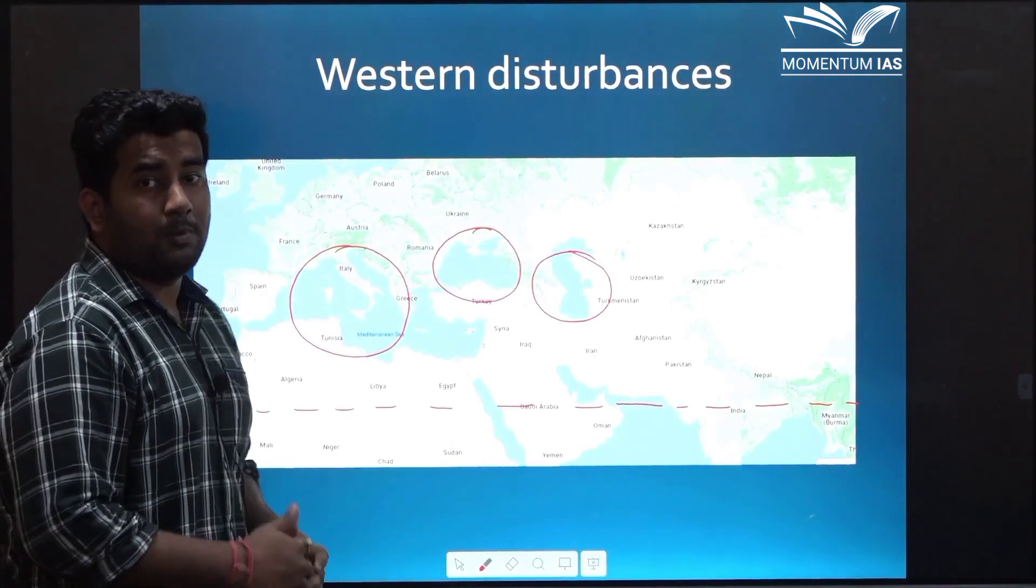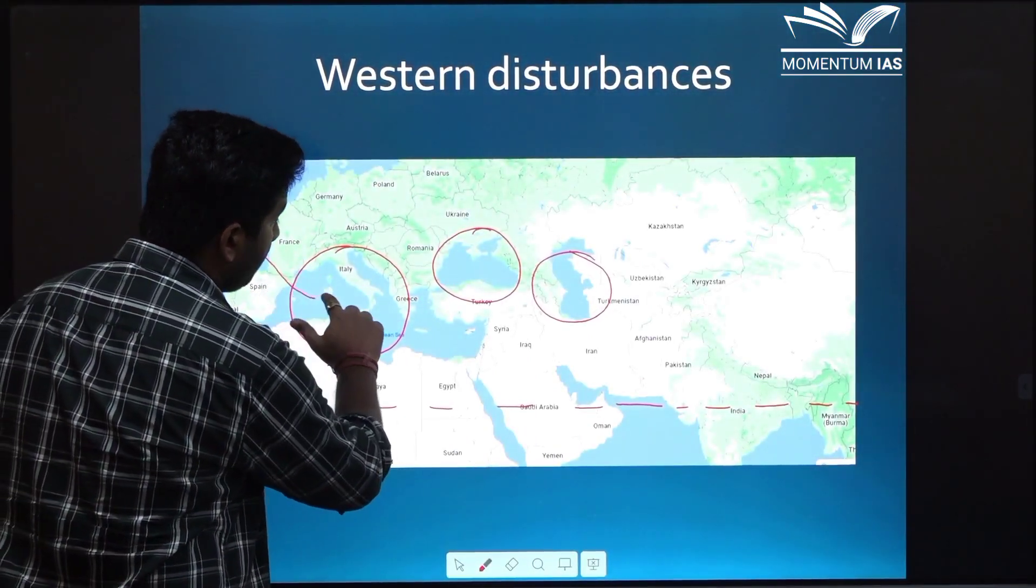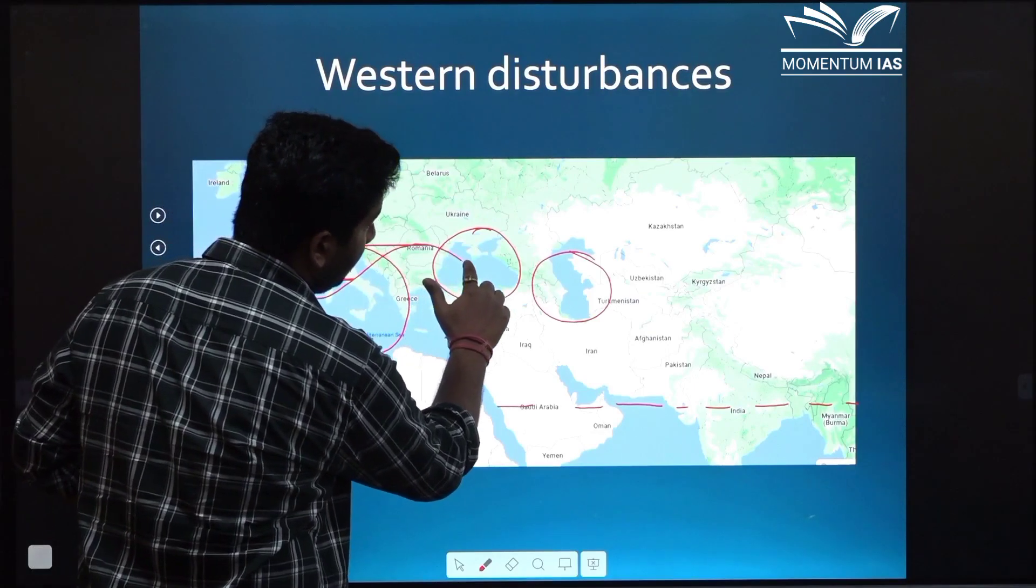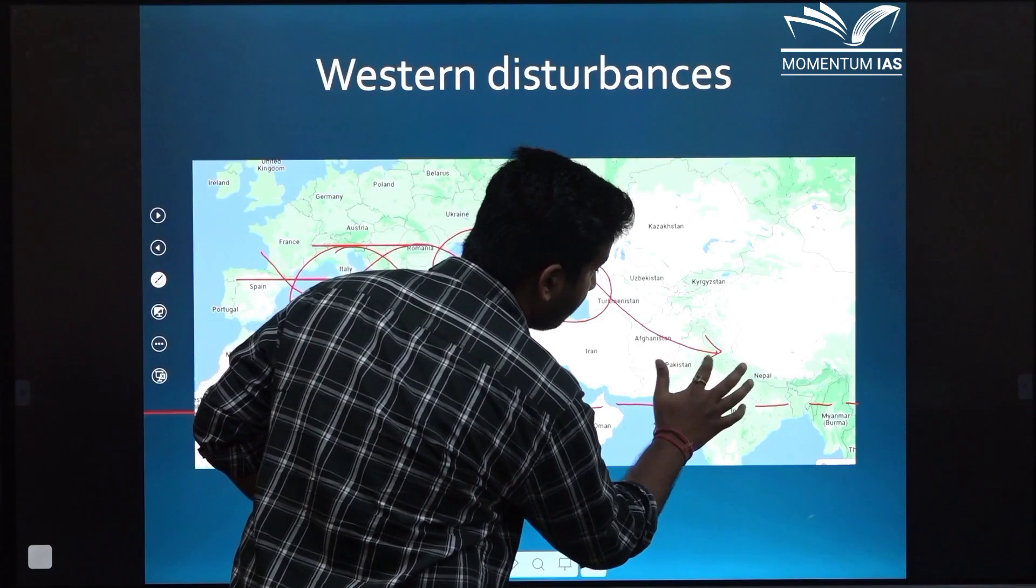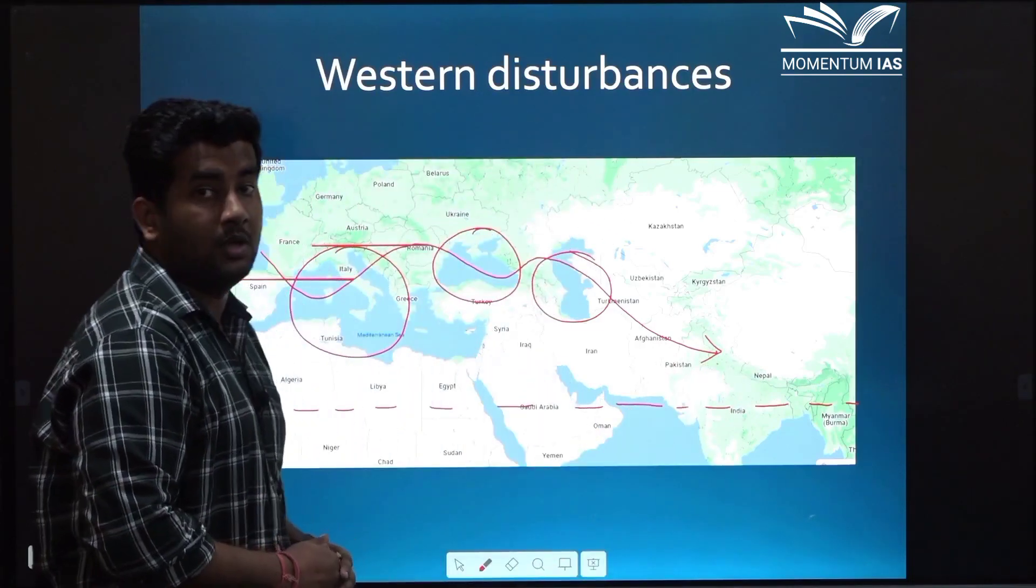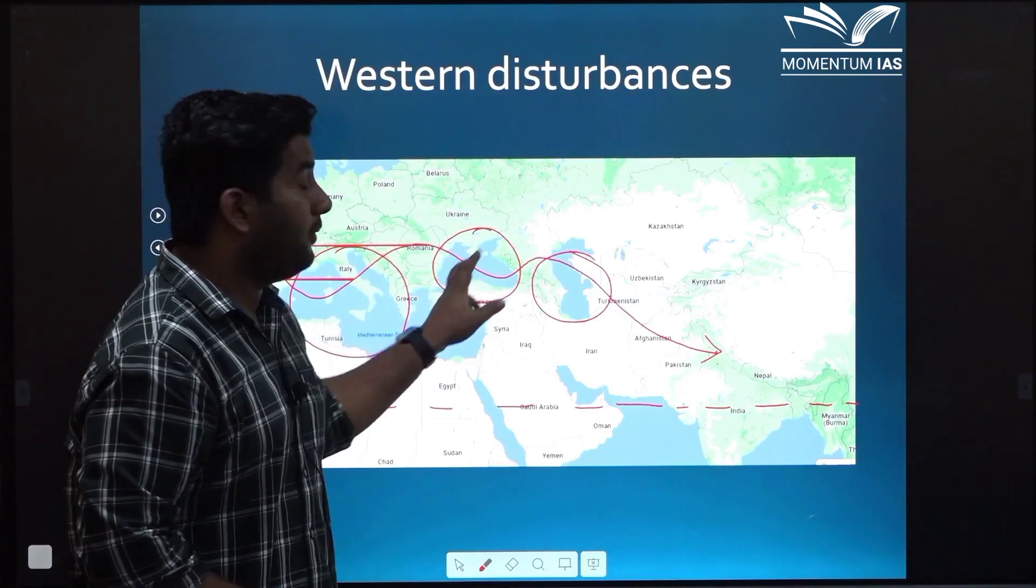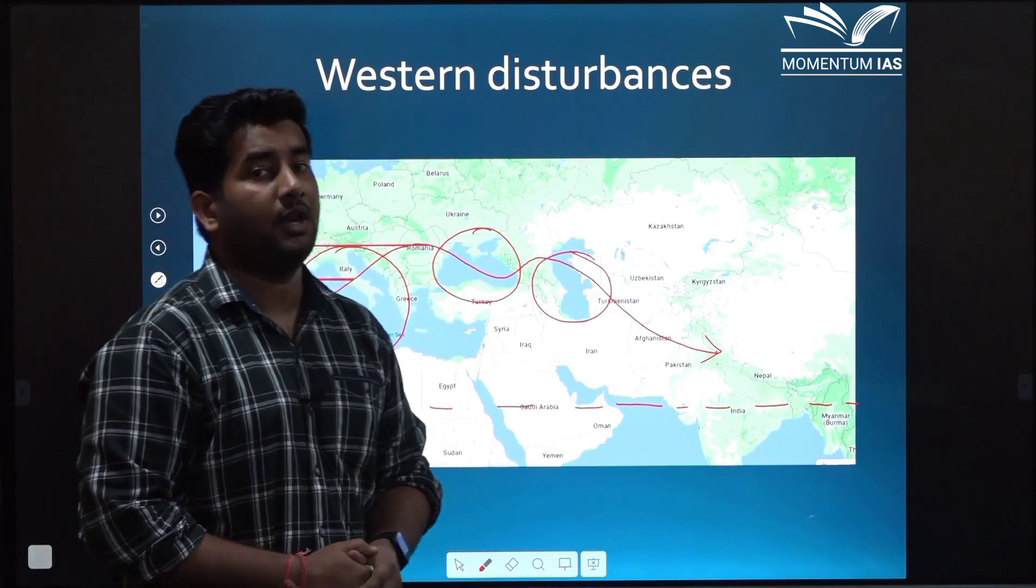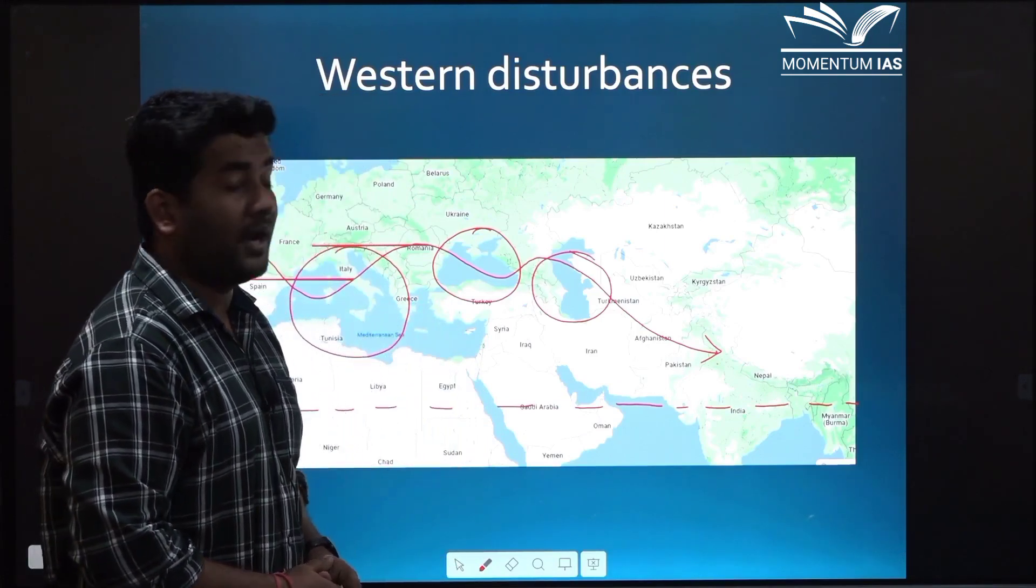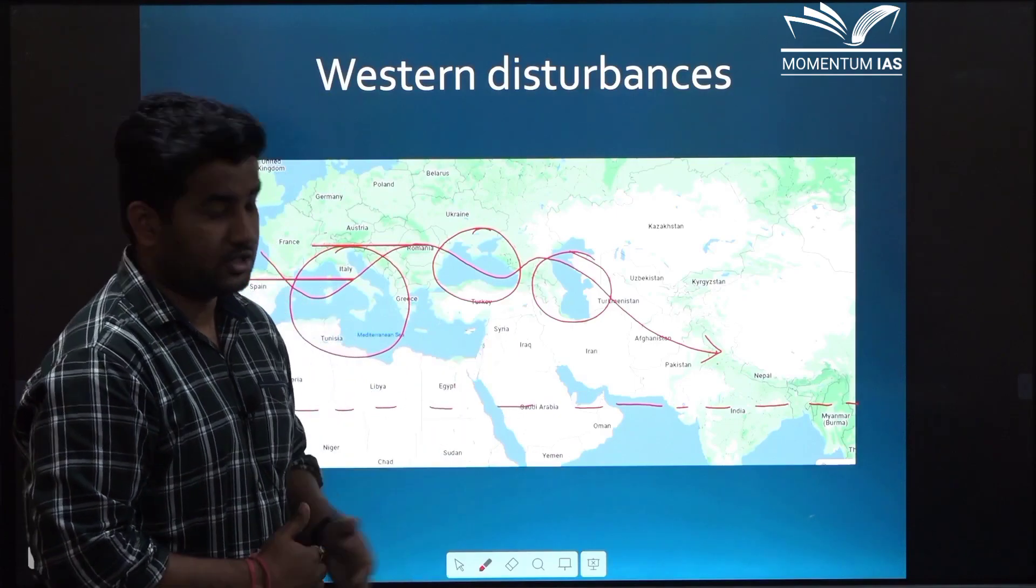India is a tropical country, the Tropic of Cancer passes through India and this region is the mid latitude region. Now the subtropical westerly jet stream takes moisture from Mediterranean Sea, Black Sea and Caspian Sea and enters into the northern and northwestern part of the Indian subcontinent. Through this it delivers moisture from these three water bodies and brings winter rainfall to India. Around 5 to 10 percent of rainfall that we discussed earlier comes from western disturbances.